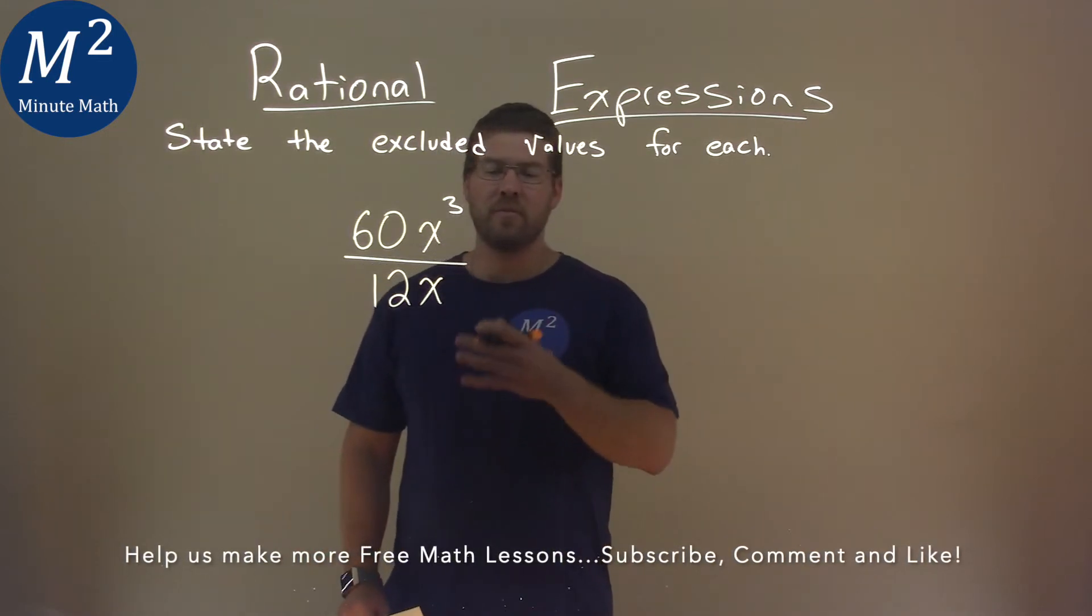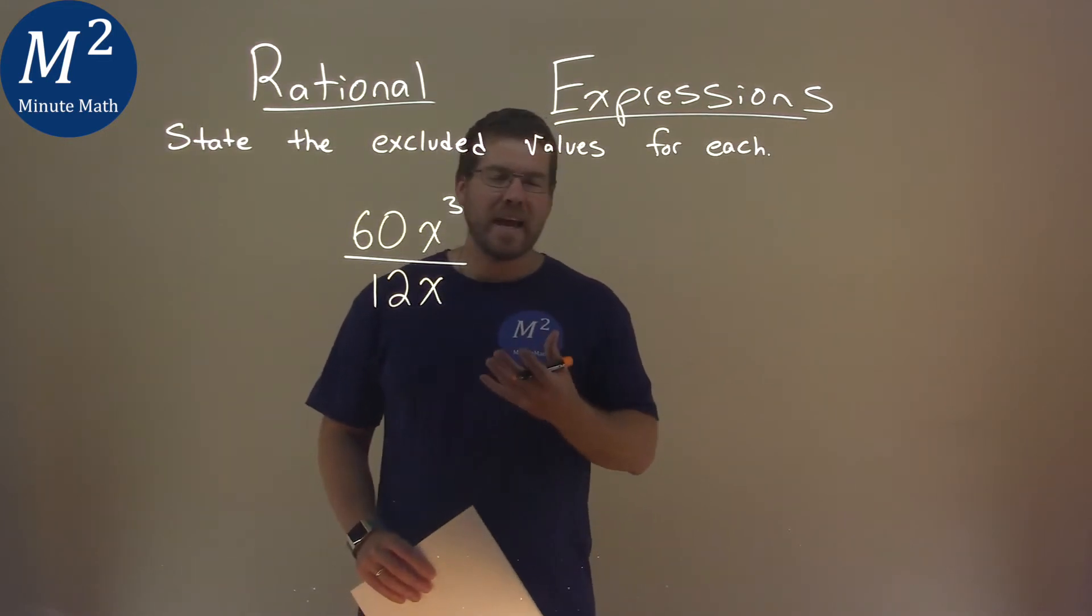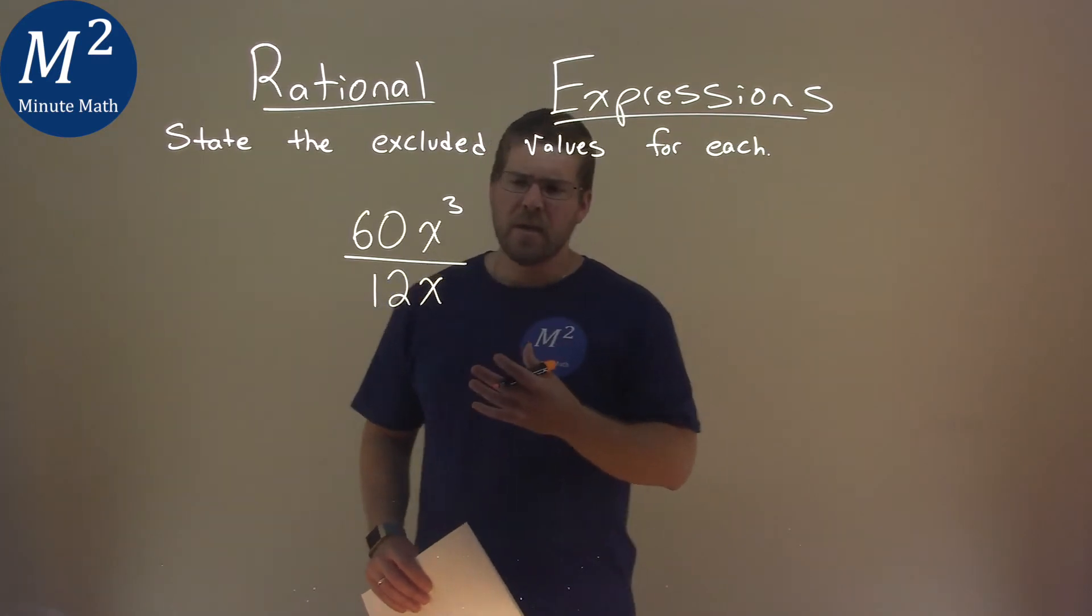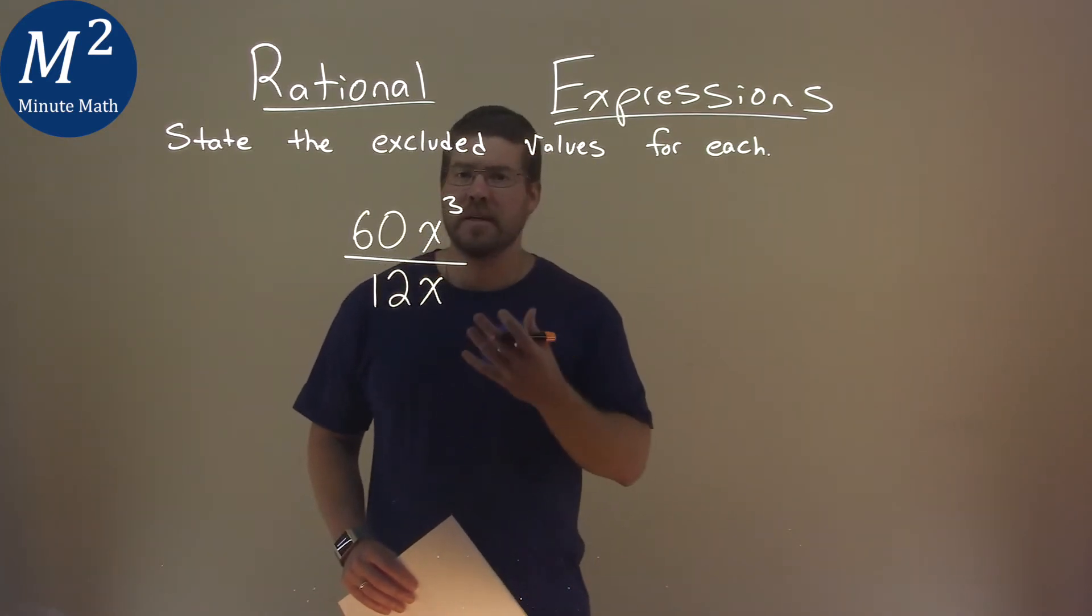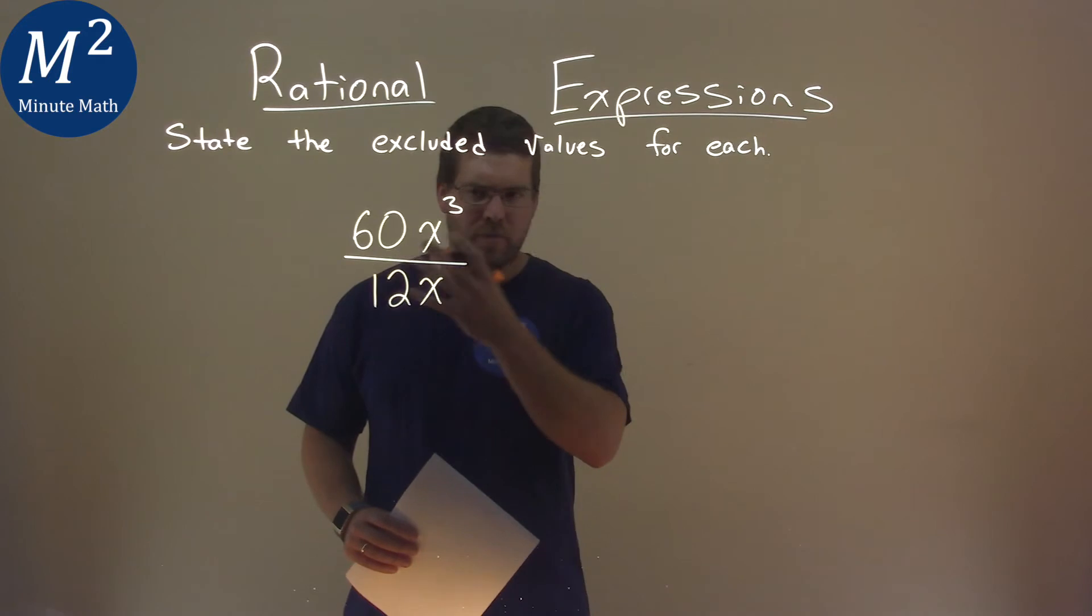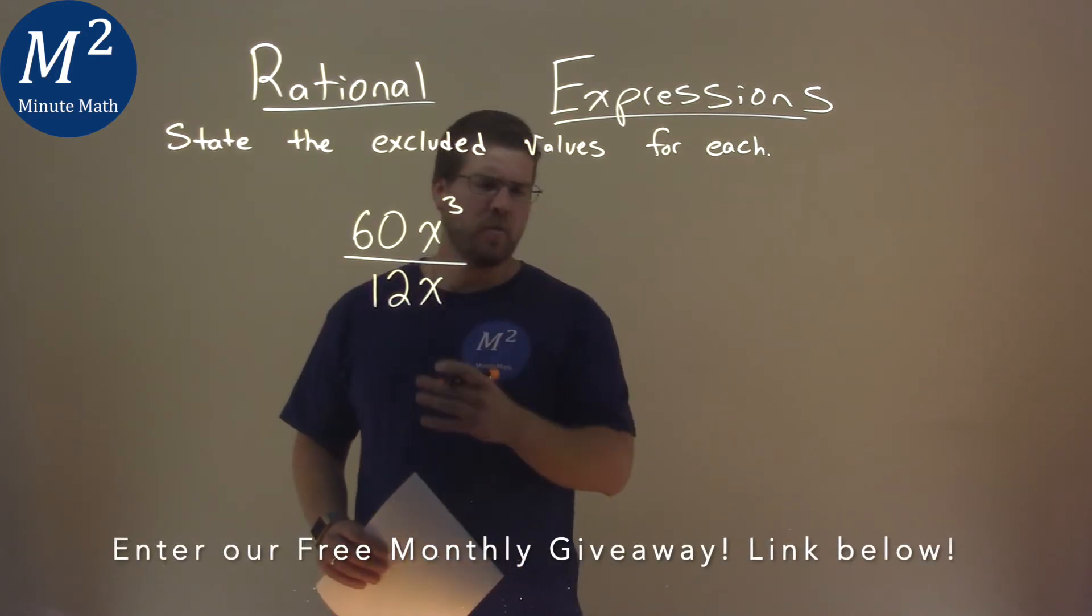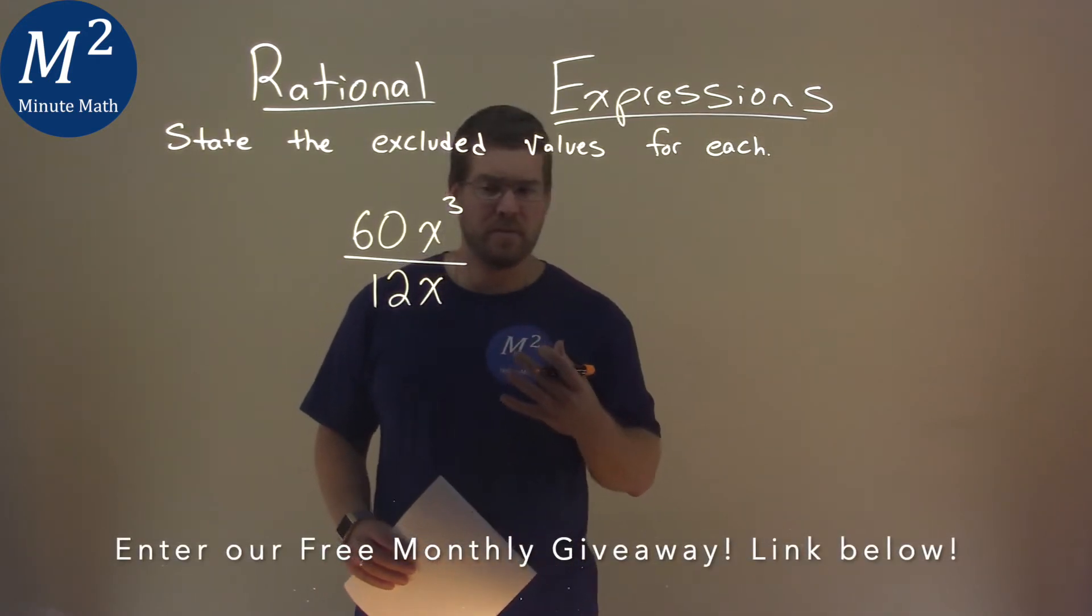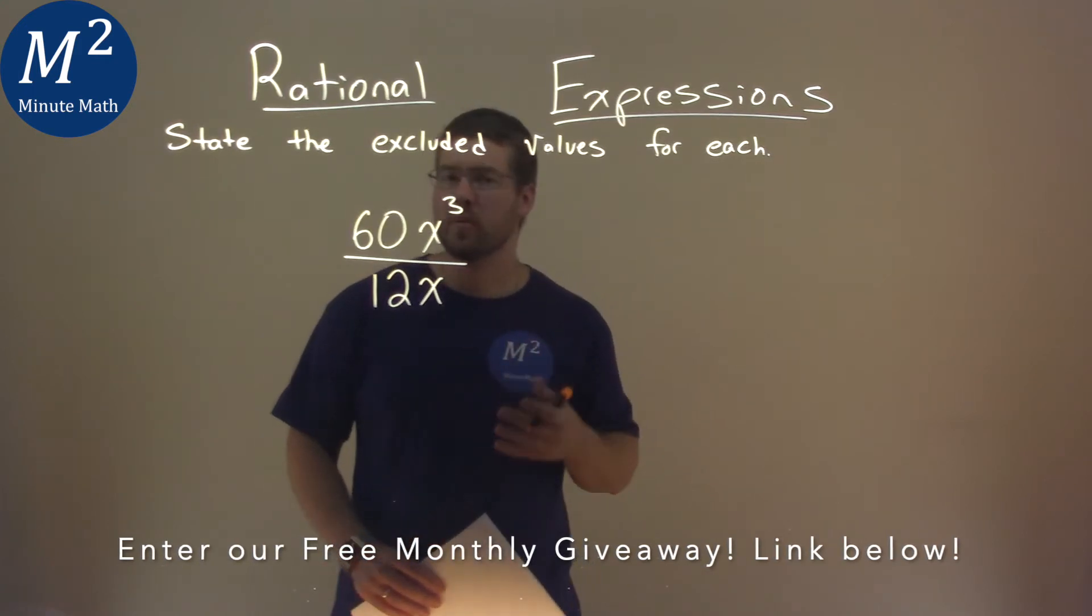The excluded value is the value that we really just can't use. We know we cannot divide by 0, so that's generally our rule of thumb with a rational expression. If we can't divide by 0, that means the denominator cannot equal 0.